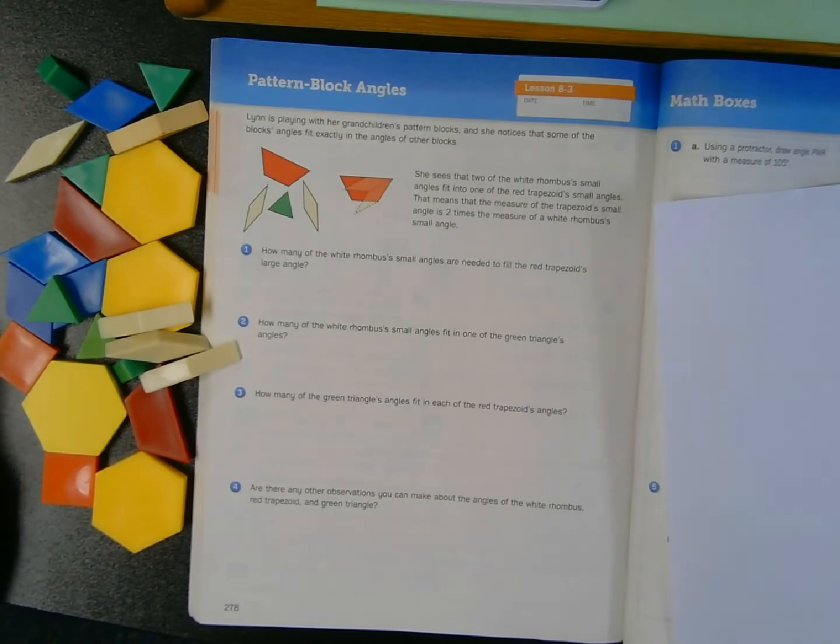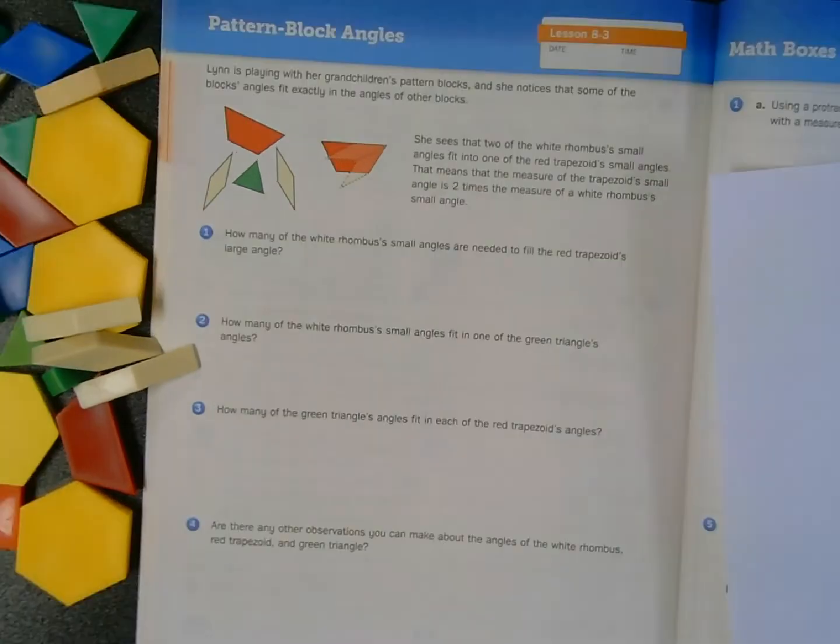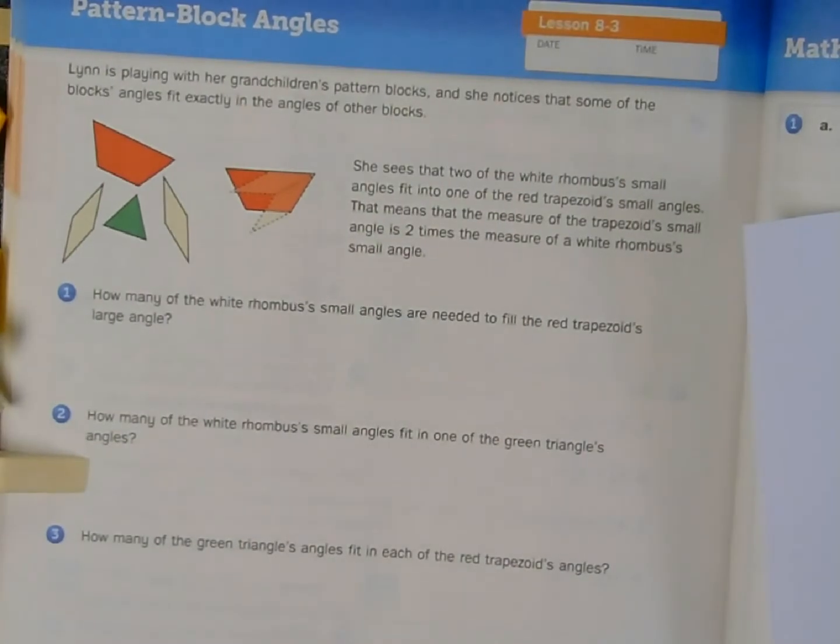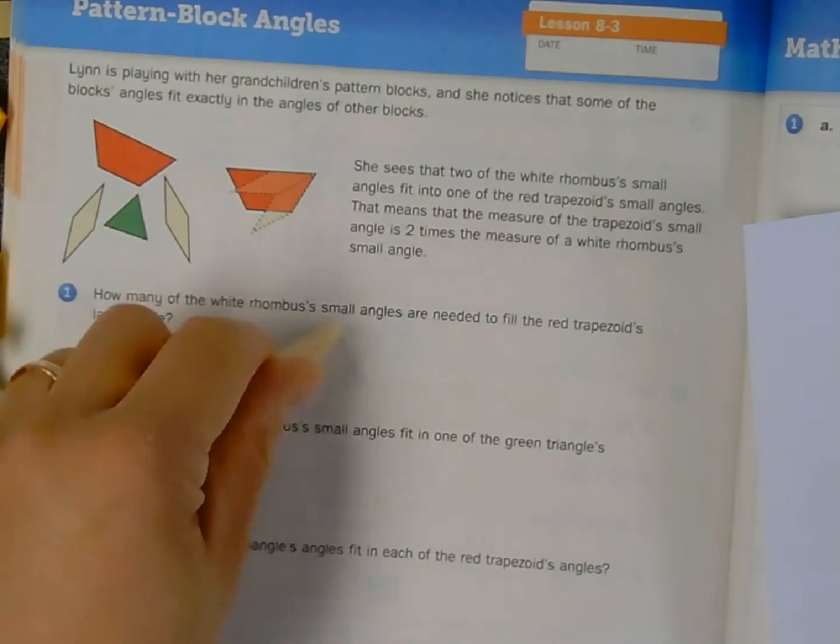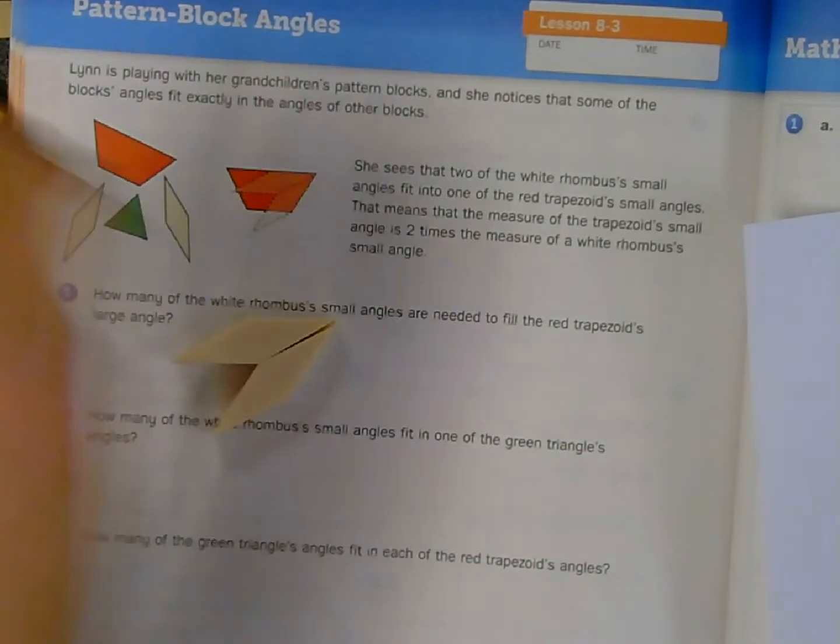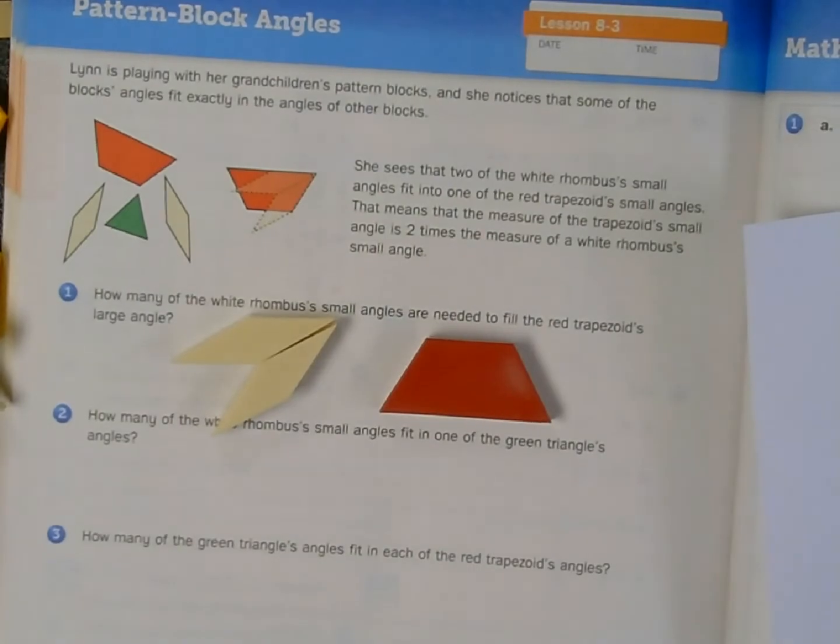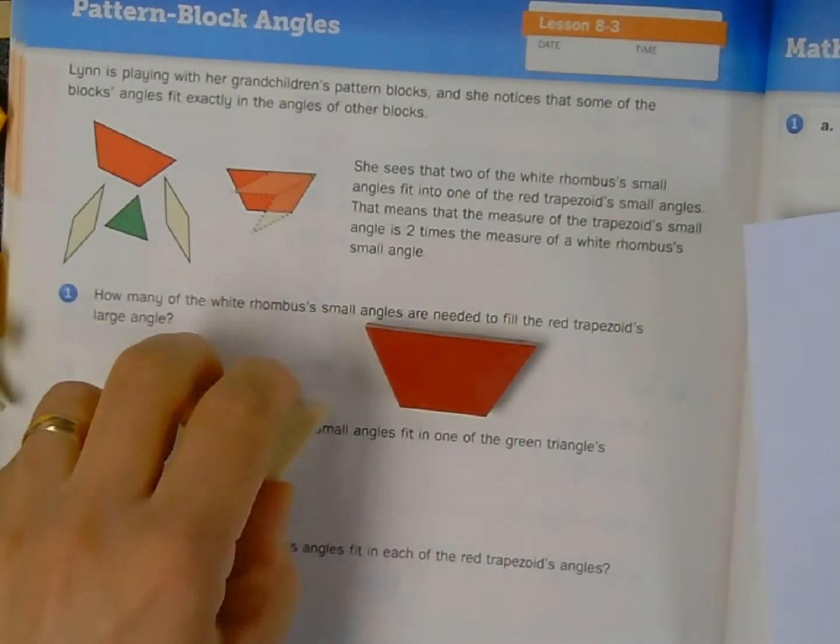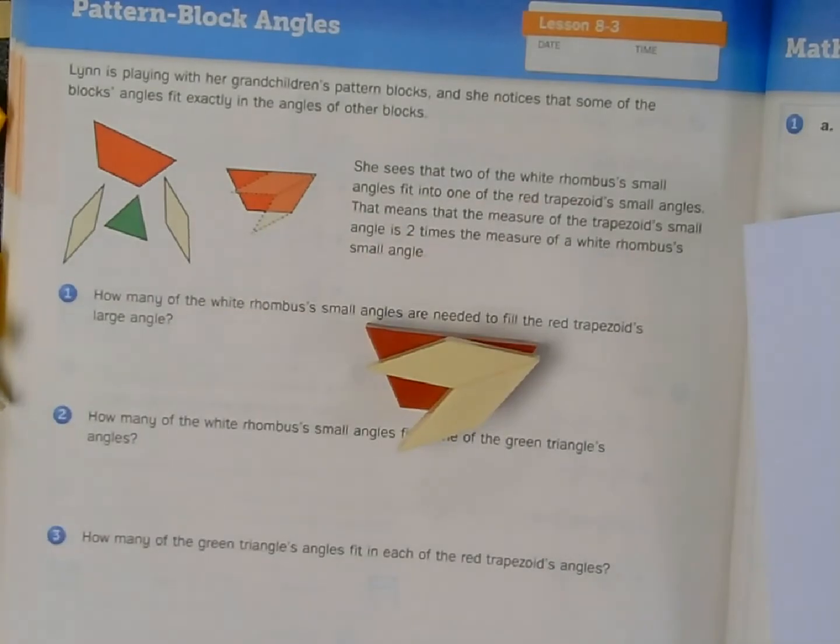Let's read the premise of this set of problems. It says that Lynn is playing with her grandchildren's pattern blocks, and she notices that some of the blocks' angles fit exactly in the angles of other blocks. She sees that two of the white rhombus' small angles fit into one of the red trapezoid's small angles. That means that the measure of the trapezoid's small angle is two times the measure of a white rhombus' small angle.